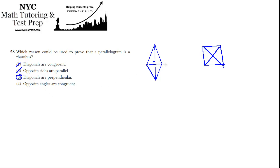Opposite sides are congruent. Opposite angles are congruent — that's going to be true in any parallelogram. It's true in a rhombus certainly, but it's true in any parallelogram even if it's not a rhombus. If you have a quick parallelogram, this angle is opposite this angle, so they're going to be congruent, but that doesn't make it a rhombus. This angle is going to be congruent with this angle — true of all parallelograms, doesn't make it a rhombus. Three is the best answer.